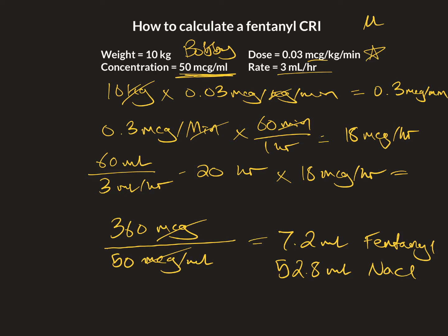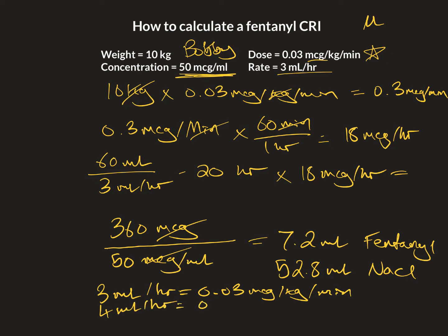So if you want to titrate this up or down, you really just change the dose rate. If 3 mils per hour is equal to 0.03 micrograms per kilo per minute, then 4 mils per hour is going to be equal to 0.04, and so on. For dose ranges you can check your formularies. I'll attach a more in-depth explanation into the guide or into the show notes. I hope this is helpful.